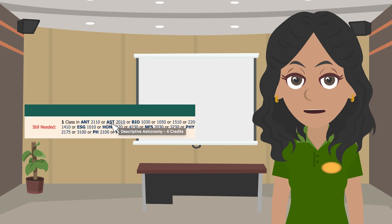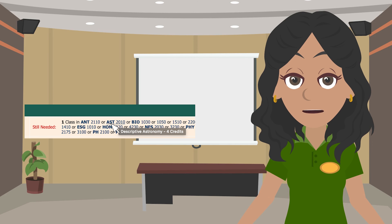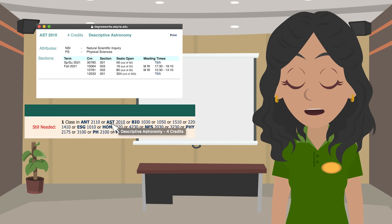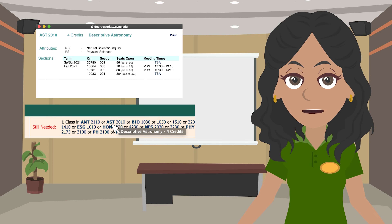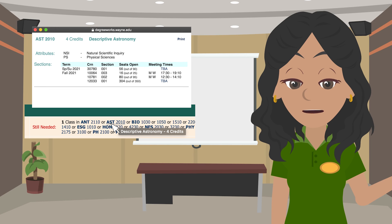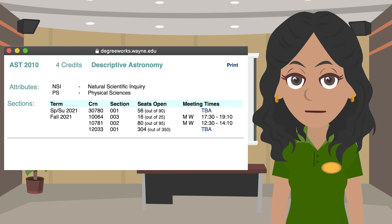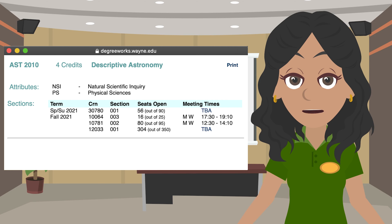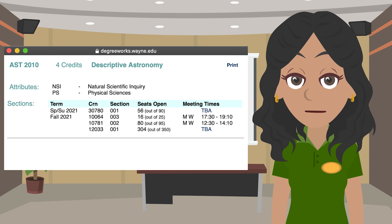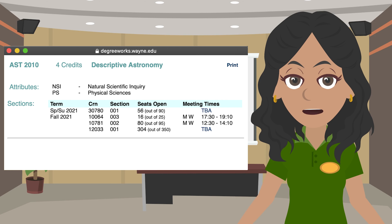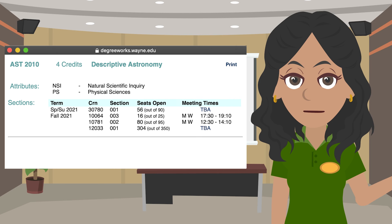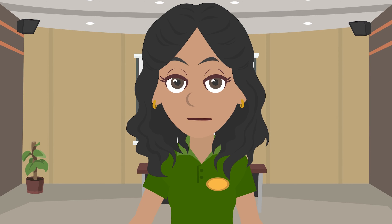If you hover over one of the course numbers on the page, you will see the name of the course and the credits it's worth. Each course number is actually a link that will open up another window. In this pop-up window, you can see specific information about that class such as its name, course description, what upcoming terms the class could be offered, along with possible times and dates within that semester. You can also see how many seats are still available for each of the sections and find the corresponding CRN, or course reference number, for each class. This CRN will help you identify the specific class section you are interested in, and you can add this directly in your registration portal.